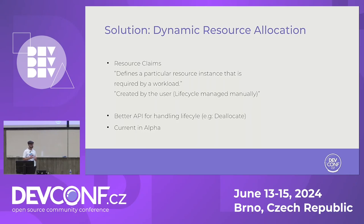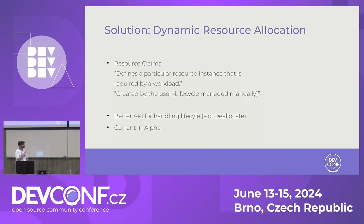There is a solution on the horizon: Dynamic Resource Allocation (DRA), still in alpha. The API is very close to persistent volume claims — you have resource classes, resource claim templates, and resource claims. Basically you say I want this resource, create a resource claim, and for the lifecycle of that resource claim the device will be allocated. Even if the pod crashes and comes back, the same device will be allocated to that workload. The main folks working on this are related to vGPUs and have many interesting use cases they're trying to fix using DRA. When it reaches GA, we will be very happy and able to do many things. There's also a better API for handling lifecycle in DRA.